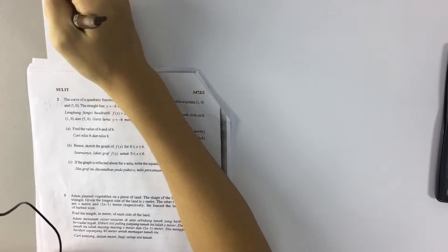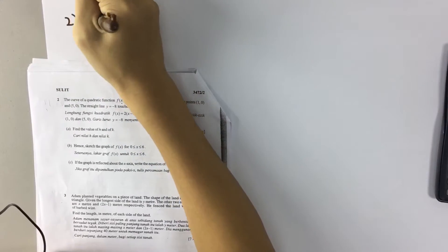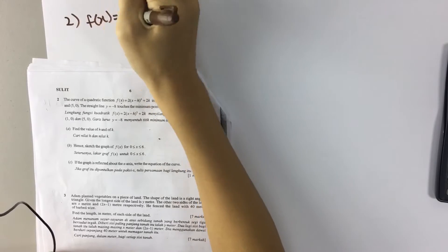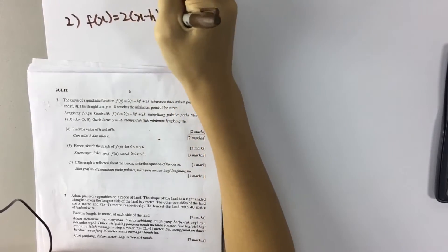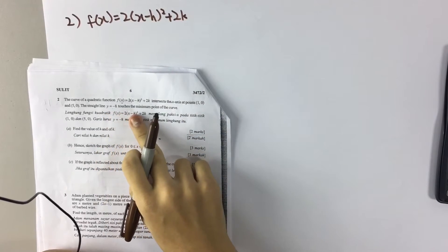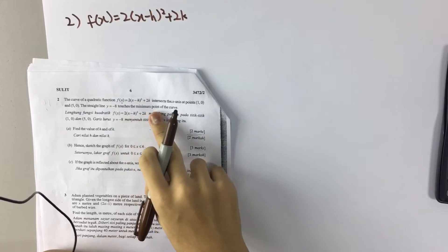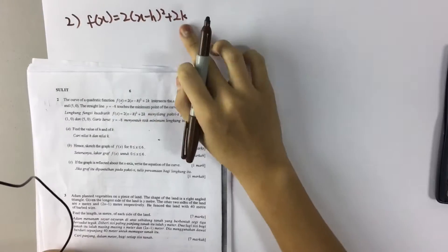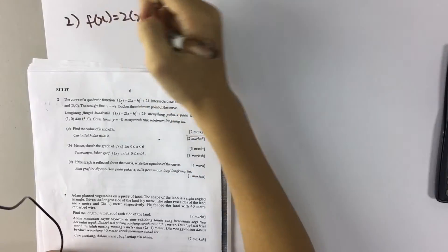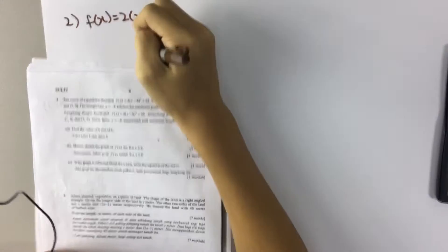First of all we copy the equation out. fx equals to 2(x minus h)² plus 2k. Since y equals negative 8 touches the minimum point of the curve, which means negative 8 is the minimum value. So 2k is also the minimum value, so 2k equals to negative 8. So k is negative 4.